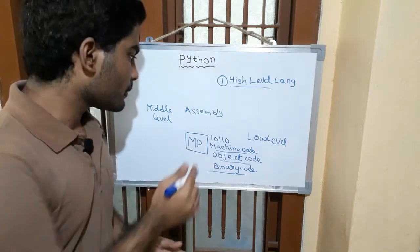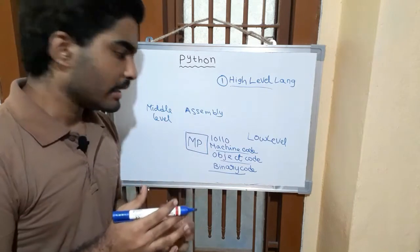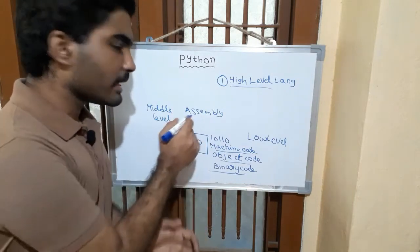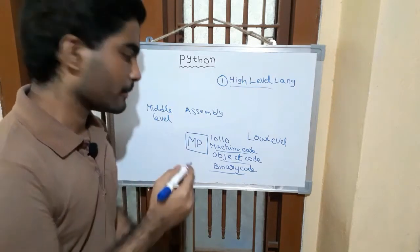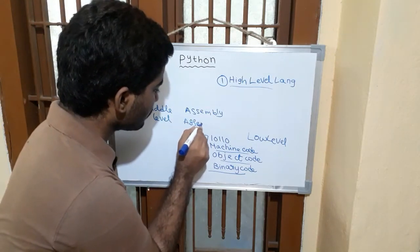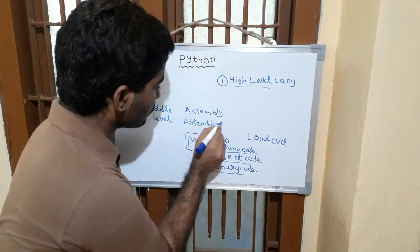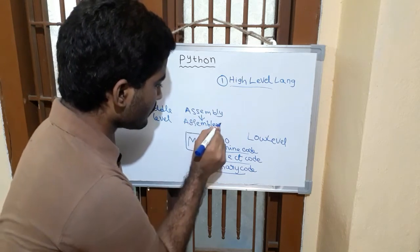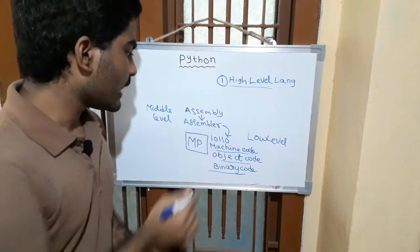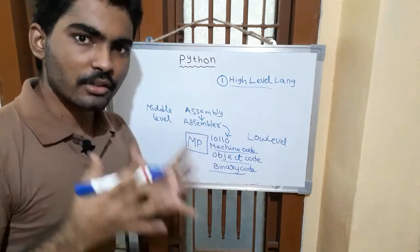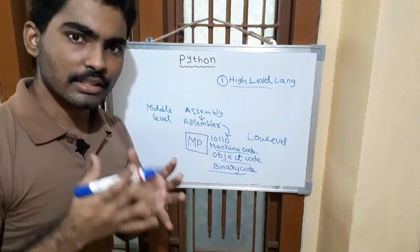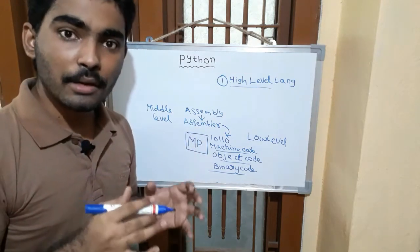We will convert this assembly language to machine code. Now let's talk about the assembly language. We have four types of assemblers.